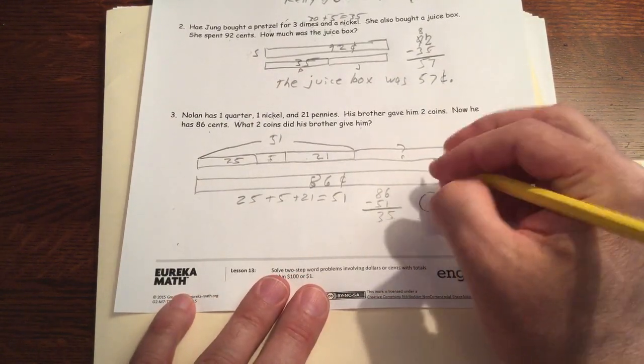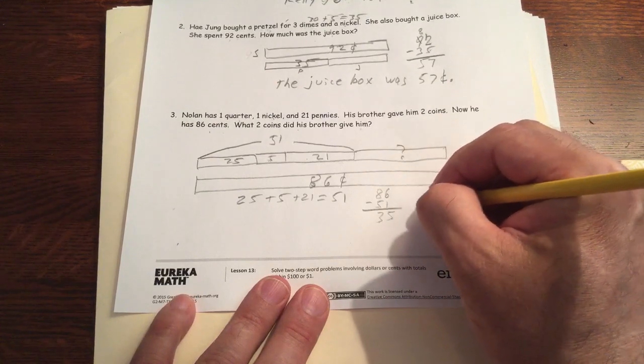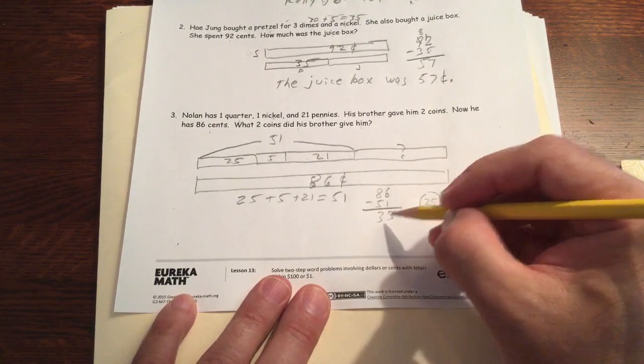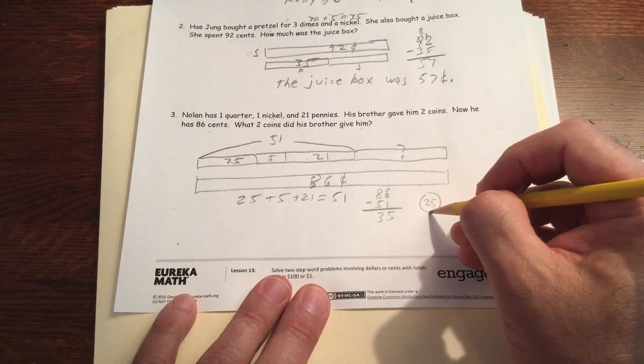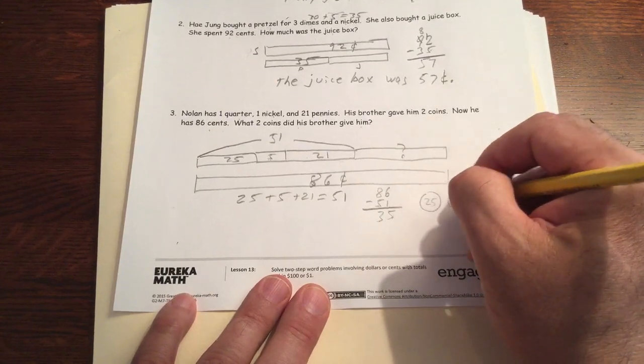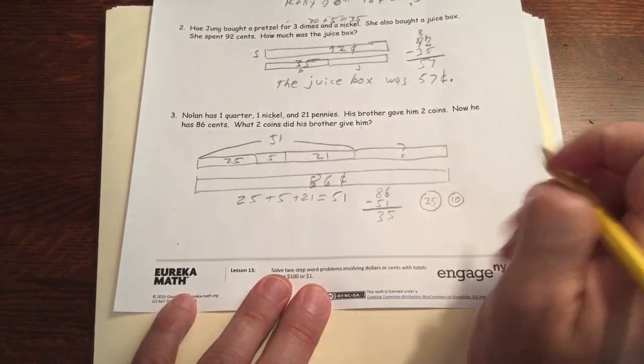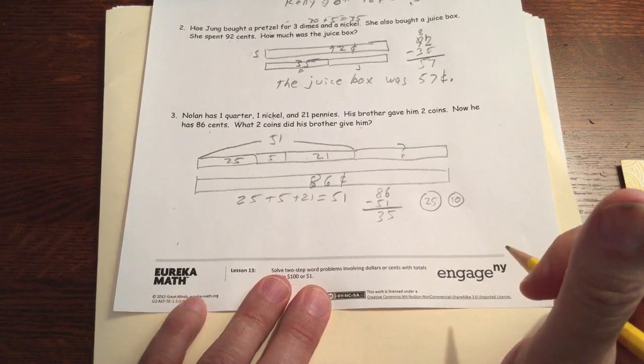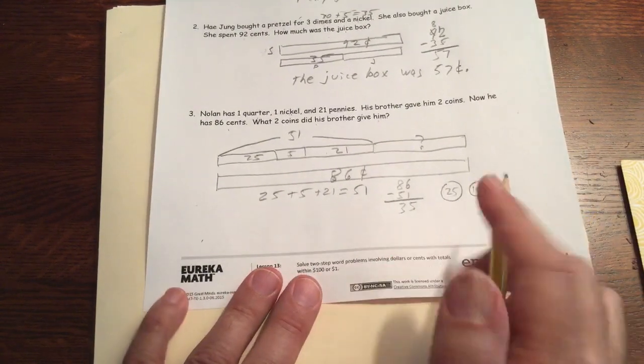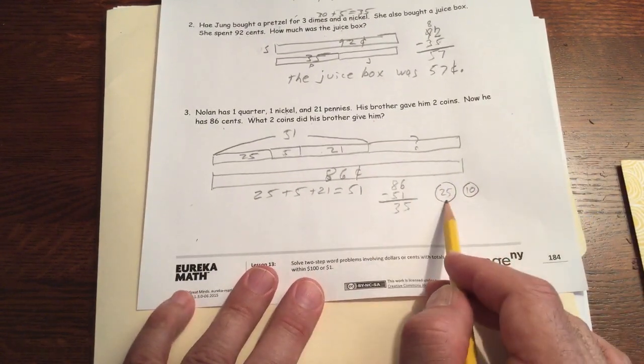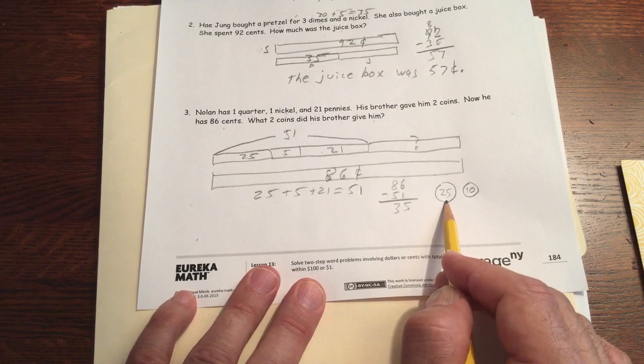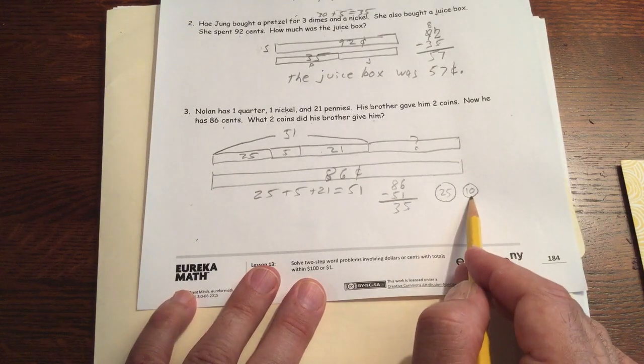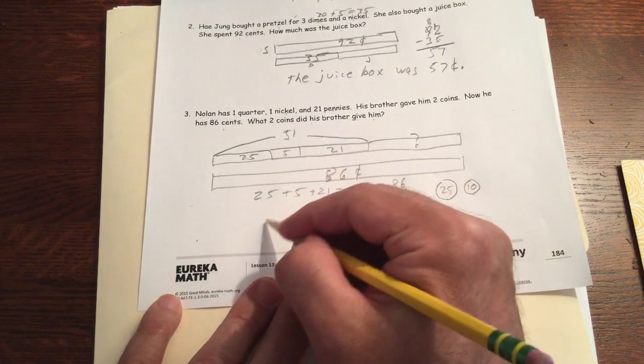If I did that with a quarter, 25, and then I would need 10 more to make 35, I would need a dime. I could do that with a quarter and a dime. So you can't do it with just dimes, you have to use a larger value coin like a quarter, and then you have 10 cents left. That's how you can figure it out.